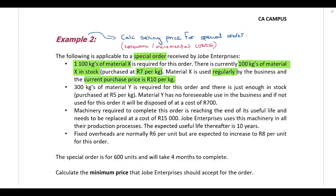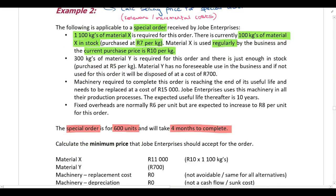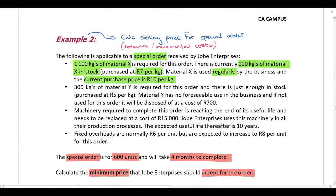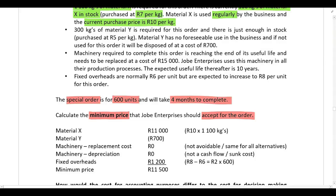We've received a special order for 600 units and it's going to take four months to complete. We need to calculate the minimum price that they should accept for the order — that's the difference between Example 1 and Example 2. The minimum price means we only cover our relevant or incremental costs.